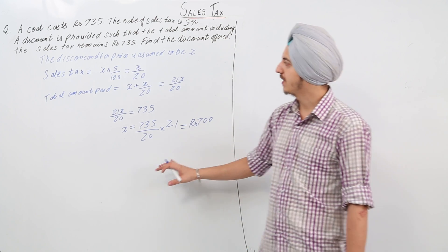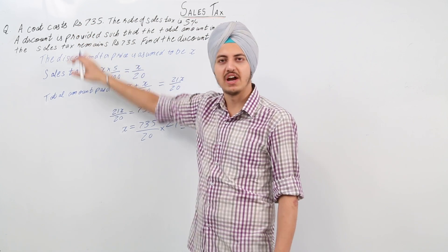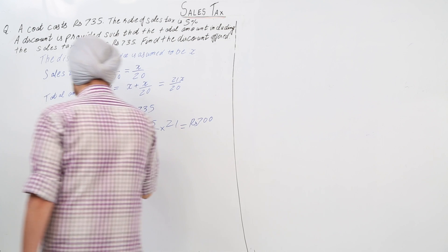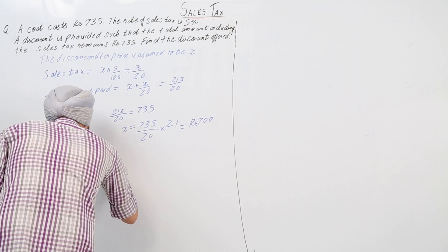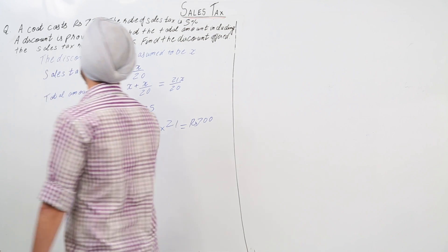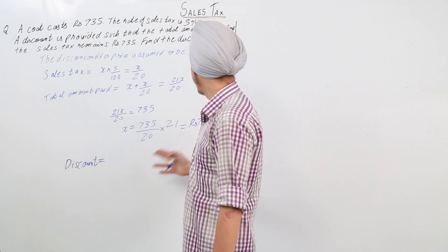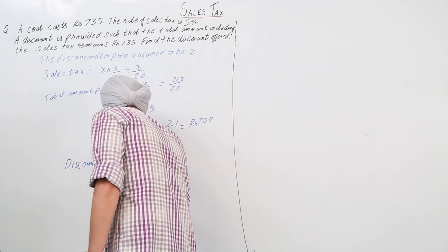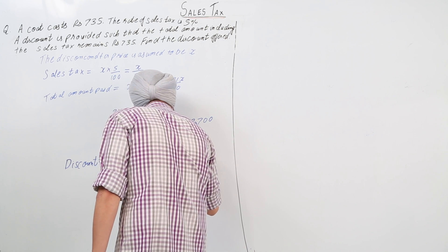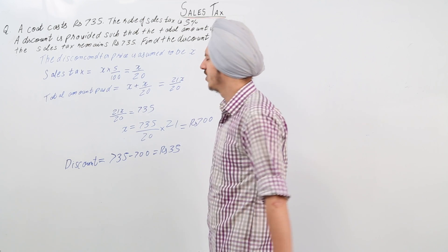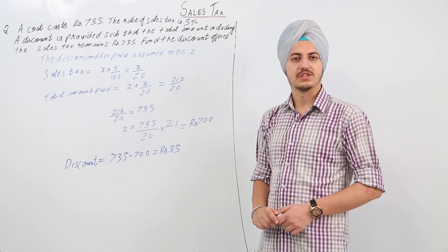If the value of x is equal to rupees 700, this means the selling price is rupees 700. The original price or marked price of the coat was rupees 735. So the discount is equal to the marked price minus the selling price, that is 735 minus 700, which is equal to rupees 35. So rupees 35 discount is provided in this question over the coat.